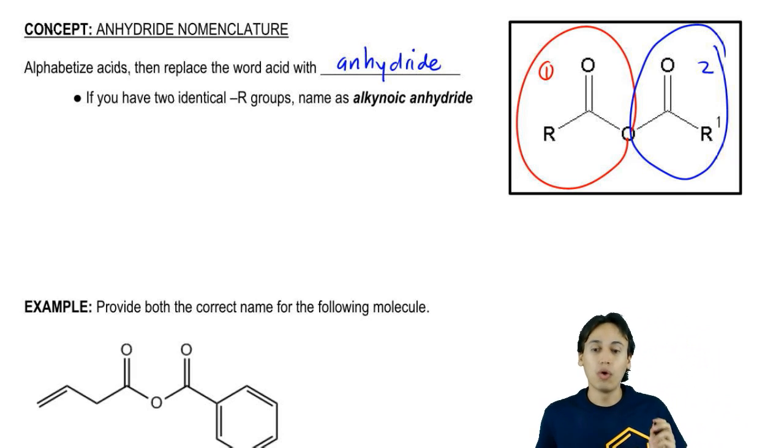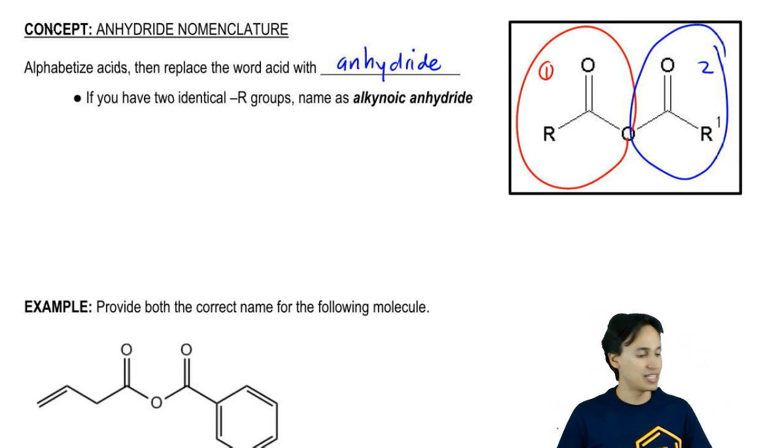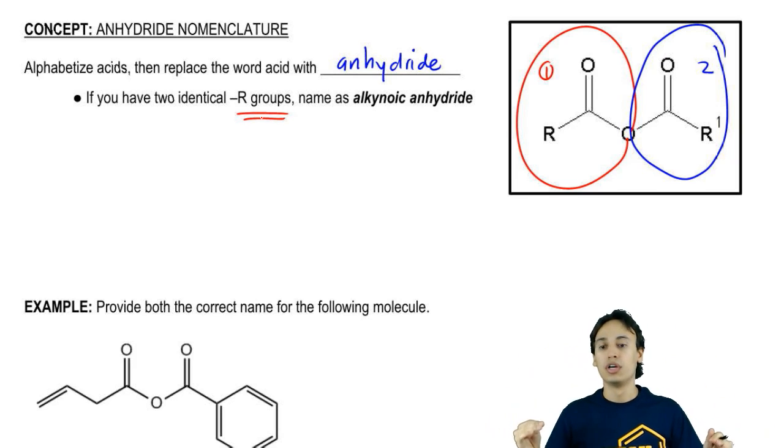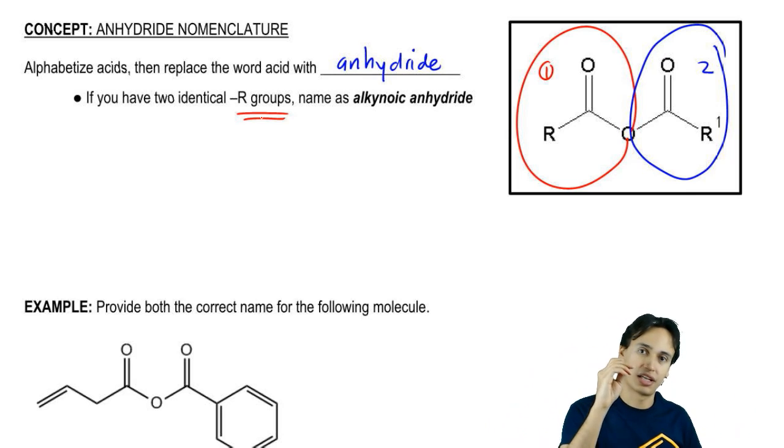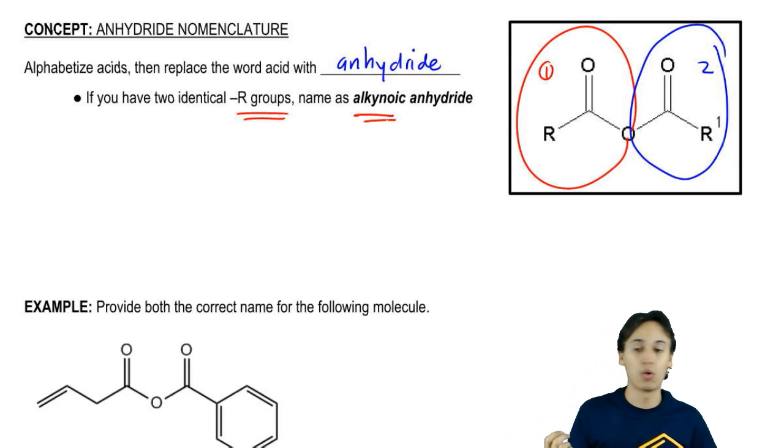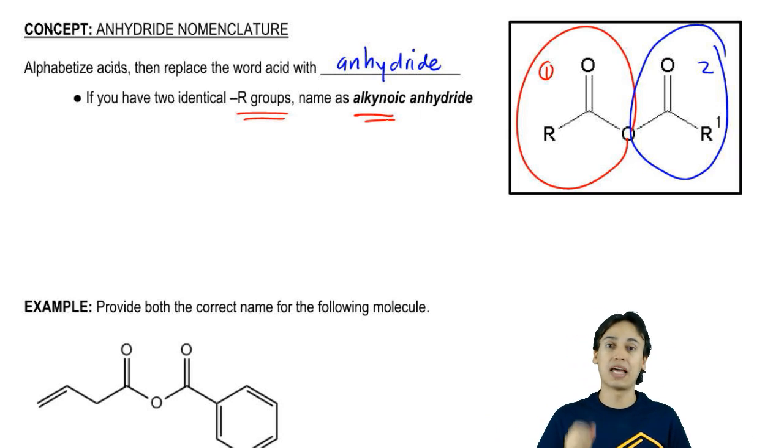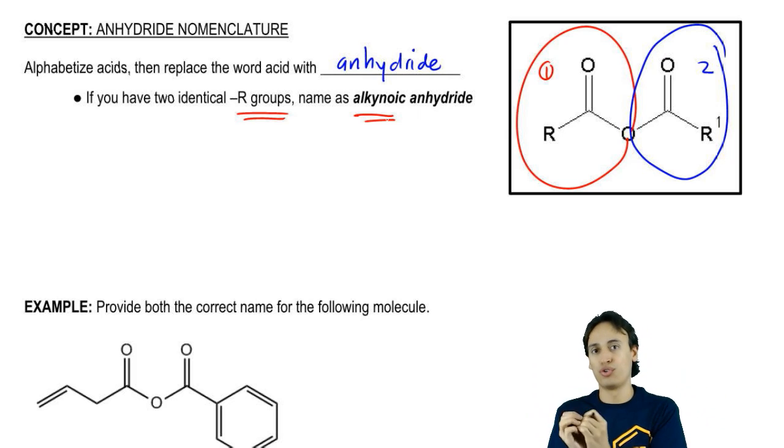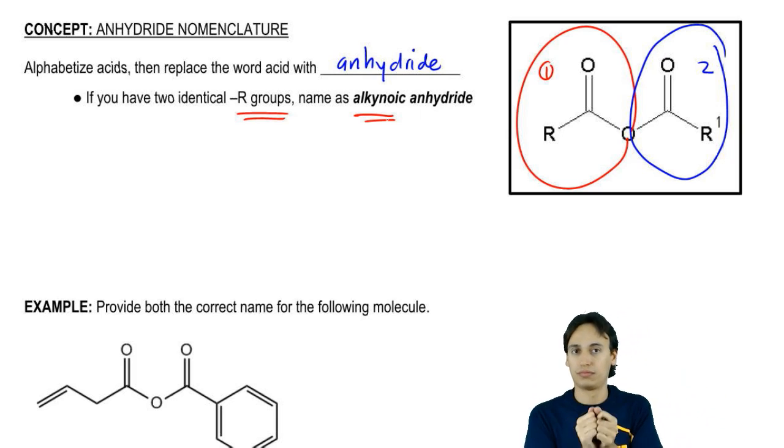Another special situation is what happens if your R groups are the same. What happens if both sides of my anhydride are symmetrical? You don't have to say that it's carboxylic acid 1, carboxylic acid 2 anhydride. You could just say carboxylic acid 1 anhydride, just alkenoic anhydride. Why? Because that means that you're assuming that one combined with another version of itself to make an anhydride. You're basically saying that this is the anhydride you would yield through the condensation of these two carboxylic acids.